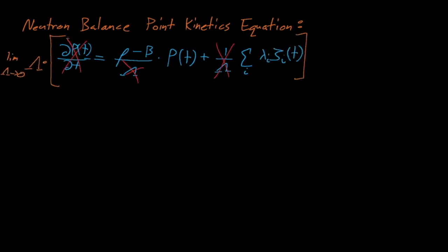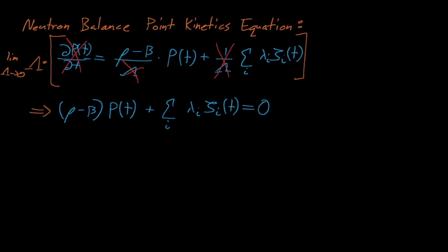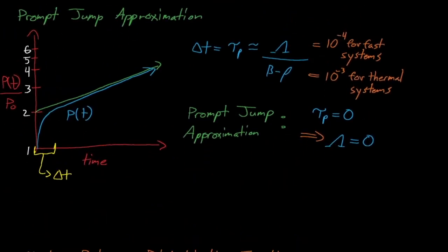Our lambdas cancel out on the power and squiggle terms, but not on the derivative of the power term, which thus becomes 0. This does not mean that we assume that the power derivative is equal to 0, but rather that it is removed completely from this balance equation. We will now solve for the adjusted initial power, which will serve as the new initial condition for our power when we solve our point kinetics equations.